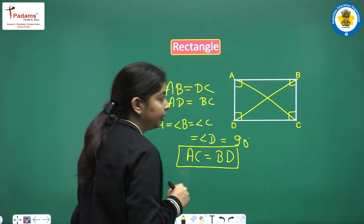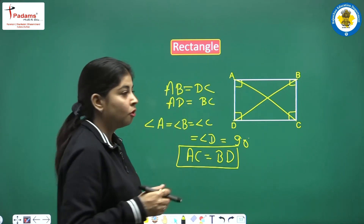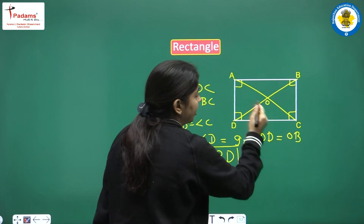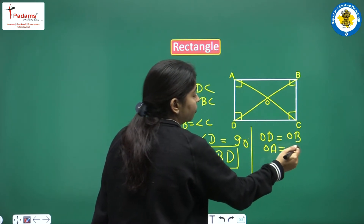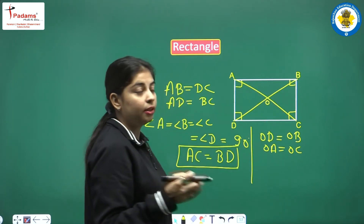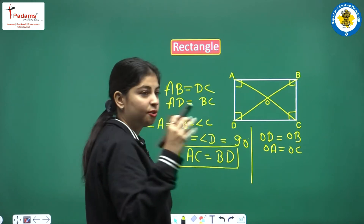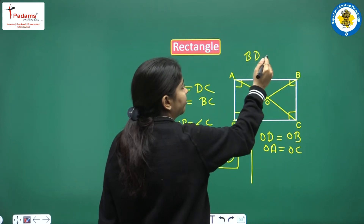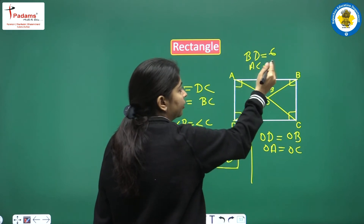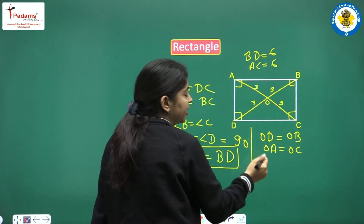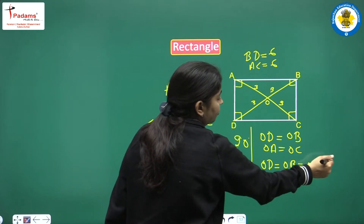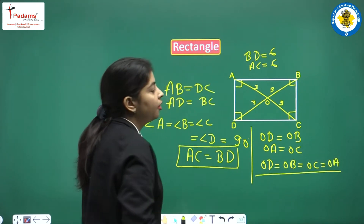In a rectangle, like in a parallelogram, the diagonals bisect each other: OD equals OB and OA equals OC. Moreover, in a rectangle the diagonals are equal in length — AC equals BD. So if BD is 6, OB equals 3, and if AC is 6, OA equals OC equals OB equals OD equals 3.